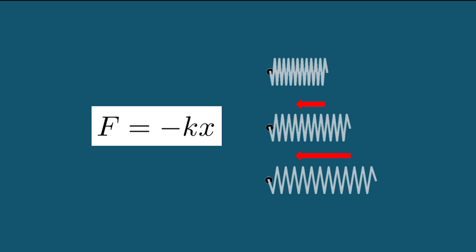This restoring force can be written as F equals minus kx. Here, k represents the stiffness of the spring, and x is how far we've stretched it past its resting length. We can see the force is negative when x is positive, which pulls it back towards its resting position.